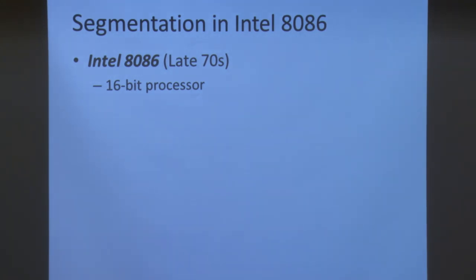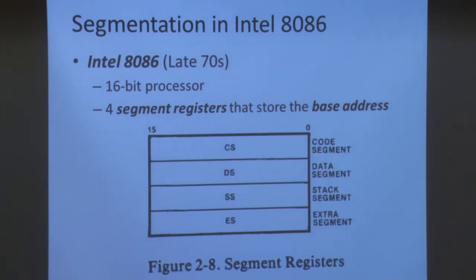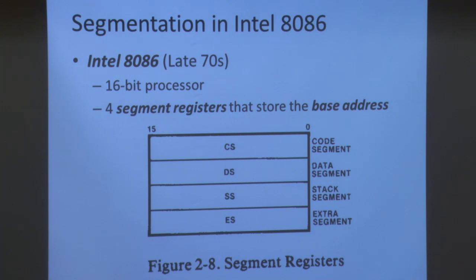Let's look at how segmentation was implemented in the Intel 8086 — the processor that started it all, giving rise to the name x86 since following products had the same naming format: 286, 386, and so on. The Intel 8086 was released in the late 70s and was a 16-bit processor. It had four segment registers storing the base addresses of four different segments: the code segment register (CS), the data segment register (DS), the stack segment register (SS), and the extra segment register (ES). These acronyms will pop up throughout this lecture.